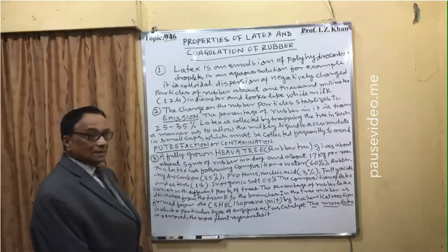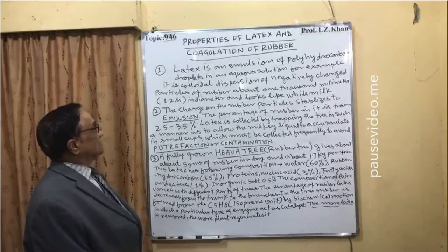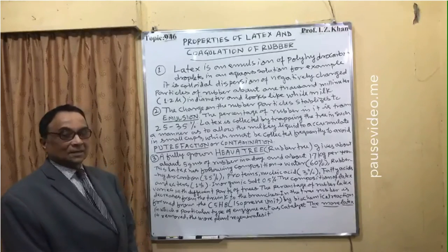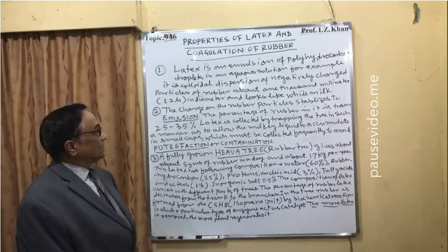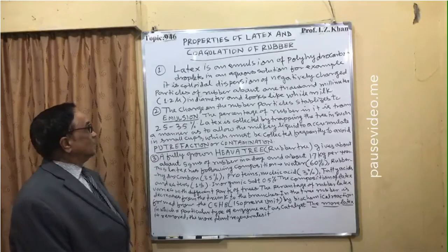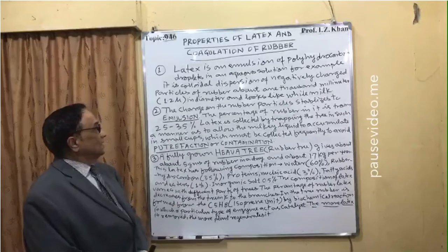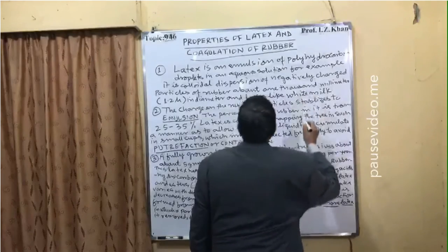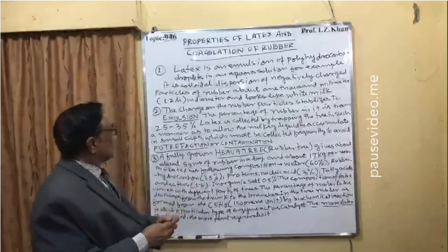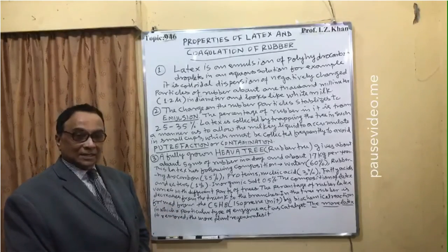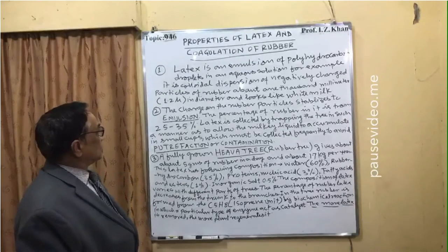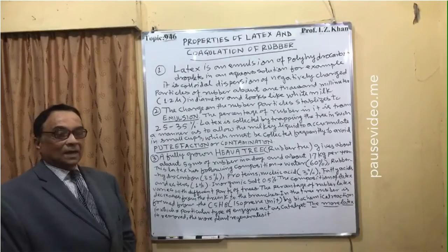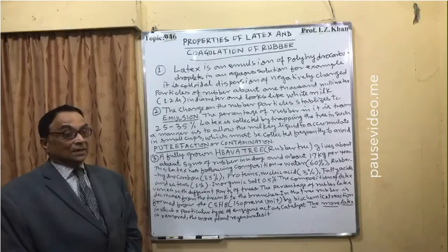For example, it is a colloidal dispersion of negatively charged particles of rubber. So these are droplets of negatively charged rubber particles, where rubber is the polymer of isoprene unit C5H8. The particle size is about 1.2 microns in diameter and it looks like white milk — it is a milky substance. Point 2: the charge on rubber particles is responsible for stabilizing the emulsion. Because of the negatively charged polyhydrocarbon isoprene units, the rubber is stabilized and that stability maintains the emulsion.